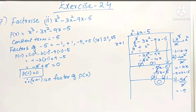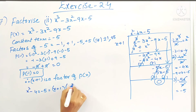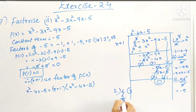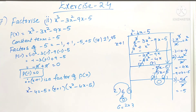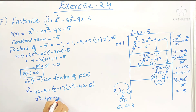By using the division algorithm we can write: dividend x cube minus 3x squared minus 9x minus 5 equals divisor x plus 1 into quotient x square minus 4x minus 5 plus remainder 0. Just like 6 equals 2 into 3 with remainder 0, here dividend equals divisor into quotient. Now we have to factorize x square minus 4x minus 5.